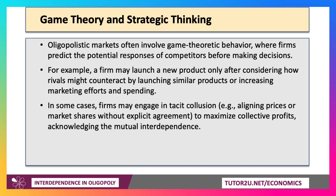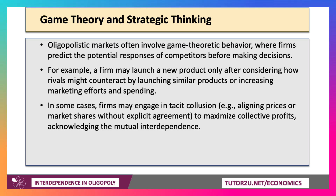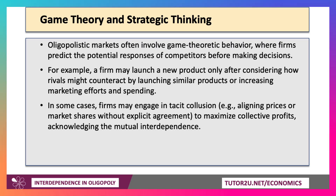In some cases, firms may decide to engage in something called tacit collusion. That just means they often price match or align prices and market shares without any explicit — often illegal — agreement. The aim is to maximise their joint profits, acknowledging mutual interdependence, which is the key word whenever you think about oligopoly.